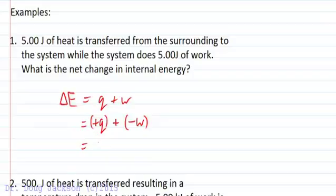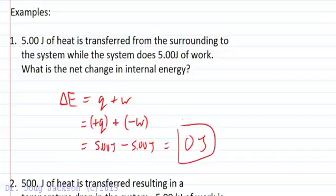So we plug those numbers in. We get positive 5 plus a negative, so minus 5 as well. And we get 0 as the net change. And so to keep our units the same, 0 joules of change.